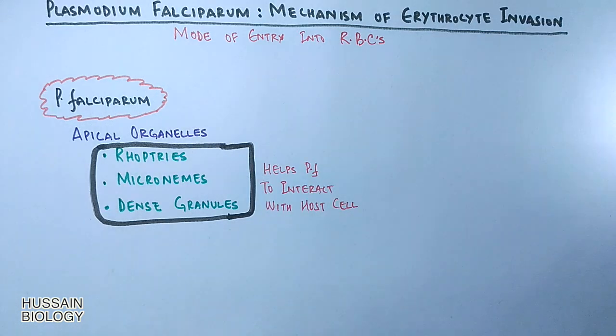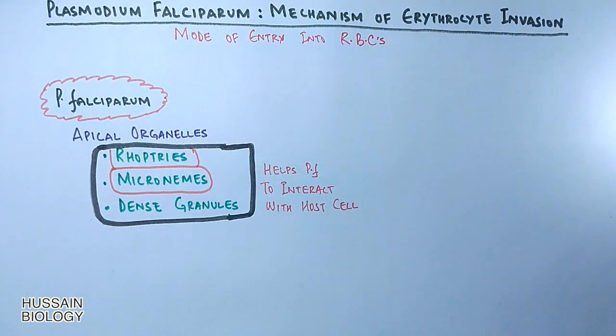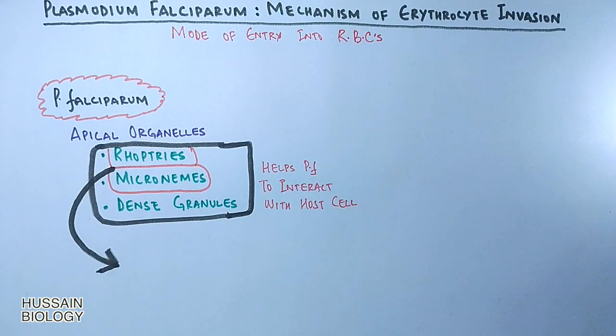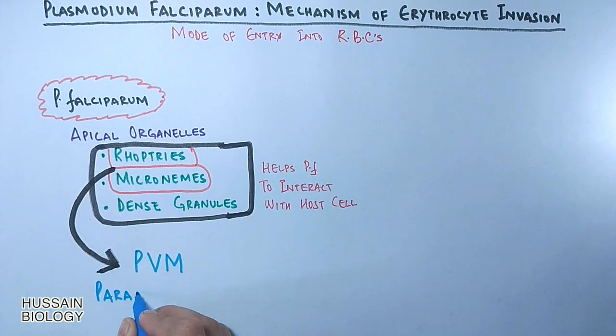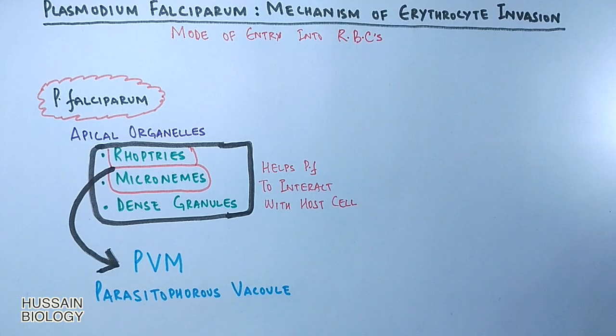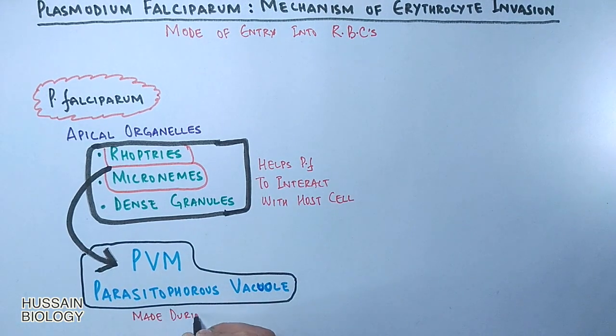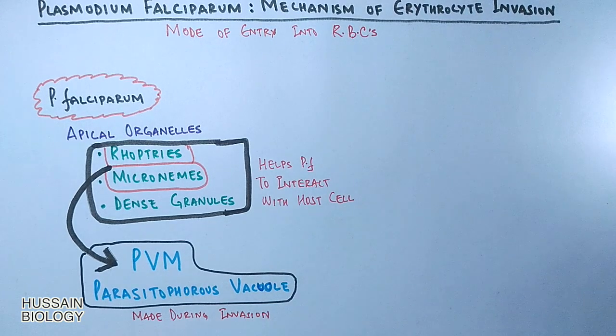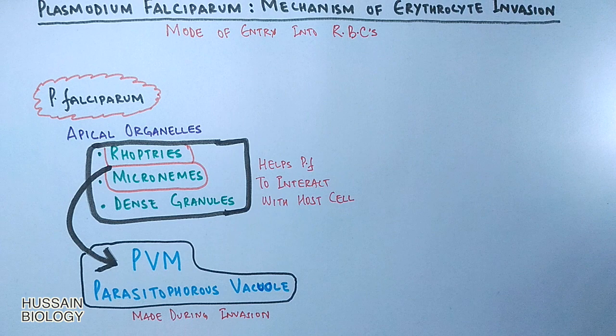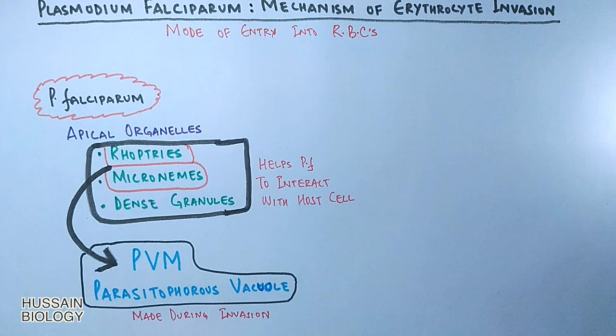Among these apical organelles, the rhoptry and microneme form a structure with the host cell membrane called the PVM, that's parasitophorous vacuole membrane. This vacuole is made during invasion and some part from the plasma membrane of the host cell is also incorporated into the PVM. This PVM gives a stable environment to the Plasmodium inside the host cell.